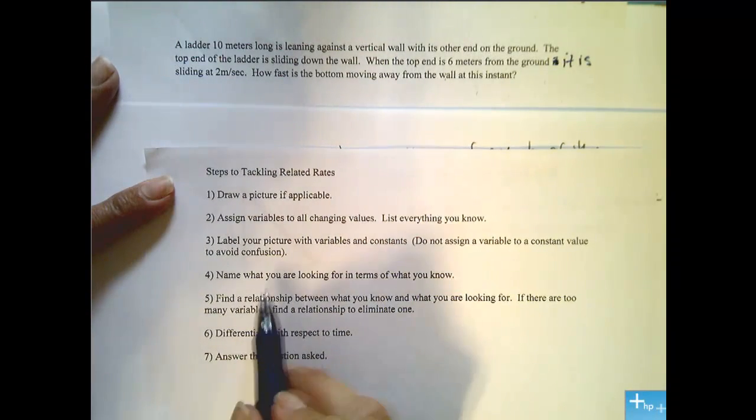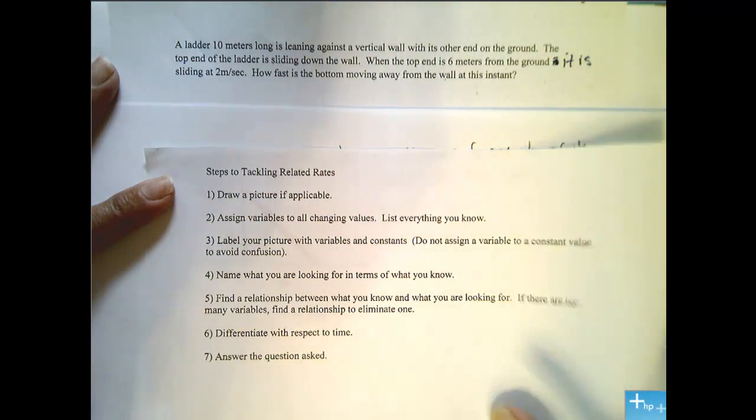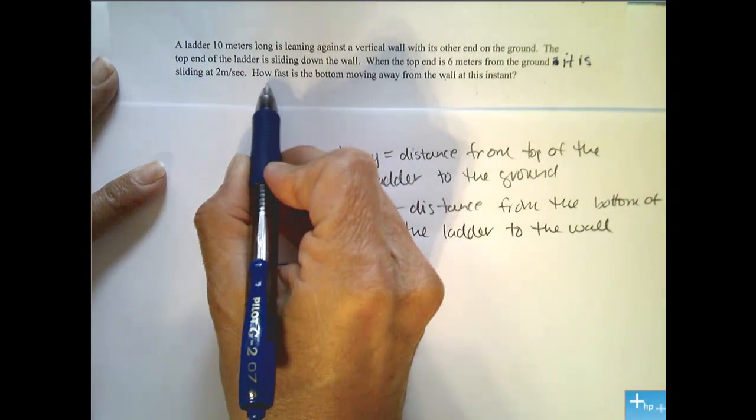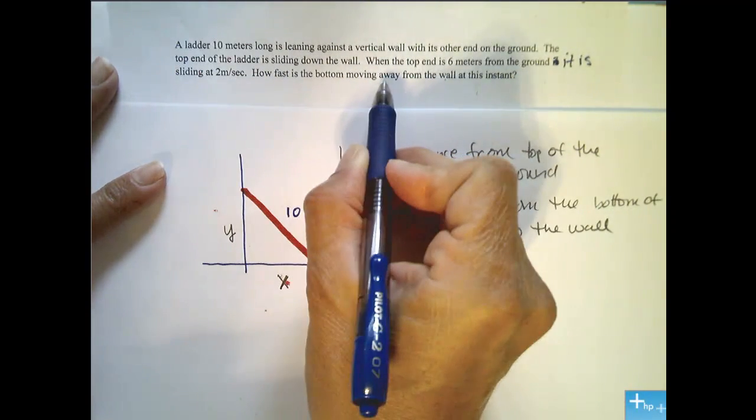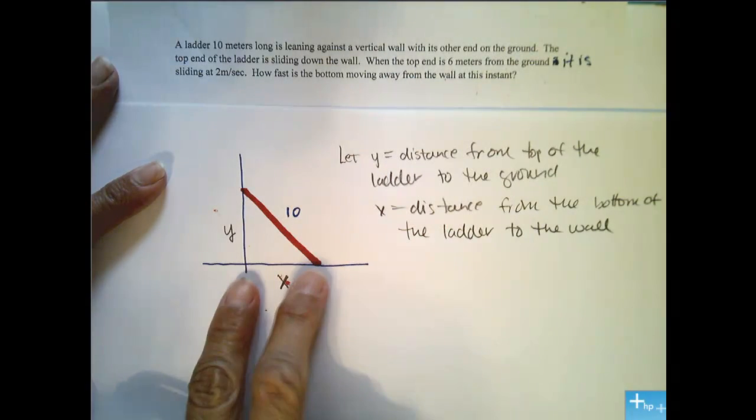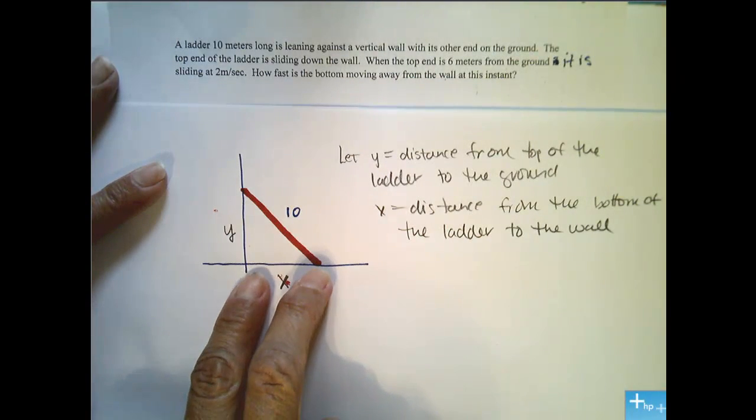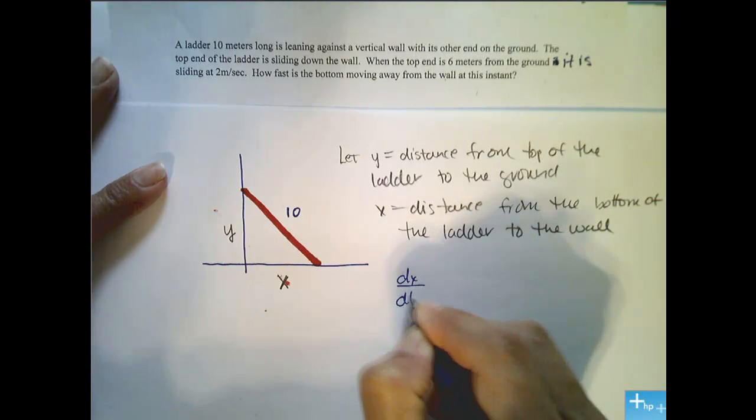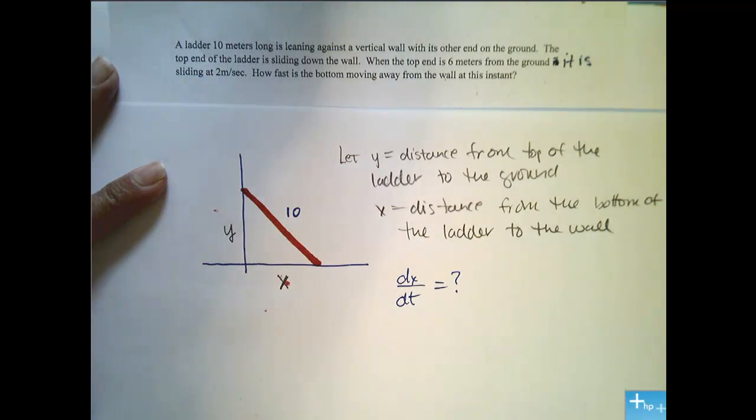Good. Alright, the next step is name what you are looking for in terms of what you know. Well, what are we looking for? How fast is the bottom moving away from the wall at this instance? That's asking how fast is x changing? So we are looking for dx/dt.